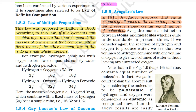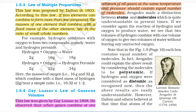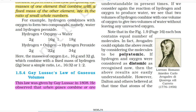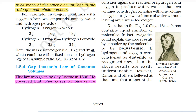1.5.3 Law of Multiple Proportions. This law was proposed by Dalton in 1803. According to this law, if two elements can combine to form more than one compound, the masses of one element that combine with a fixed mass of the other element are in the ratio of small whole numbers. For example, hydrogen combines with oxygen to form two compounds: water and hydrogen peroxide. Here the masses of oxygen (16 g and 32 g) which combine with a fixed mass of hydrogen (2 g) are in a simple ratio, that is 16:32 or 1:2.